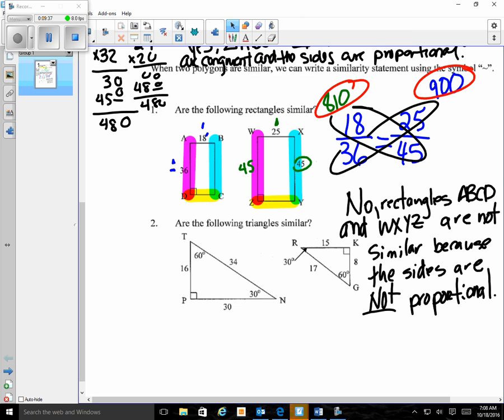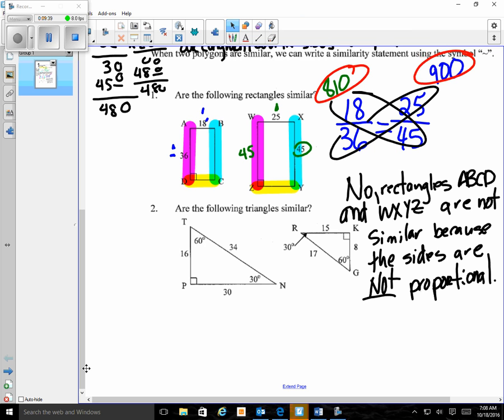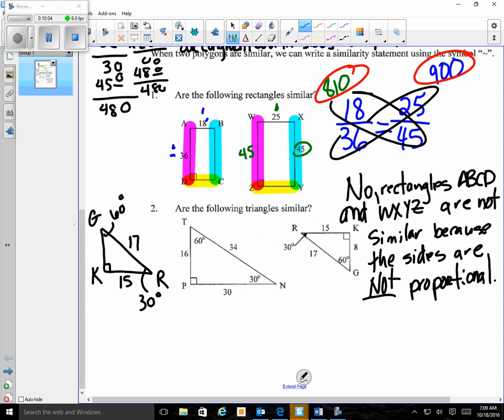Our last one says, are the following triangles similar? So again, I'm going to take my small triangle and I'm going to redraw it over here so that I can find it easier to do corresponding sides. So that's going to be K, which means that R is going to be here and G is going to be here. So that angle is 60 degrees, this angle is 30 degrees, this side is 17, 15, and we have 8.